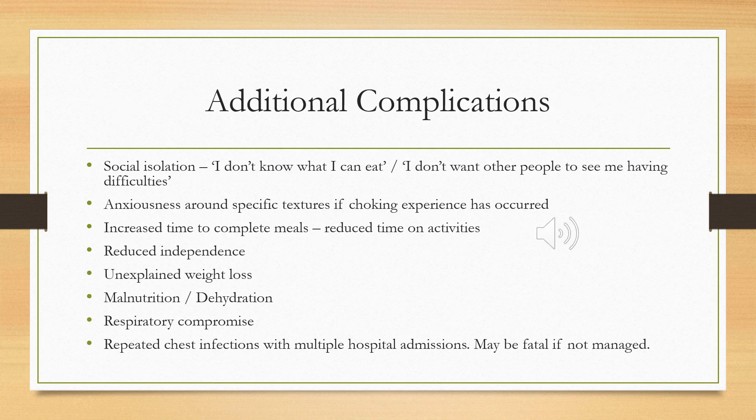Last but not least, signs of difficulty at the esophageal phase: some people might complain of a feeling of a lump in the throat, they might have reflux or heartburn, or a feeling of being full after only a small quantity of food or fluid. Additional complications of dysphagia can result in social isolation — people might say they don't know what they can eat safely, or they don't want others to see them having difficulties. Some people can develop anxiousness around specific food textures, especially if a choking experience has occurred, and might avoid all foods similar to that texture. A person might have increased time to complete a meal due to fatigue, weakness, or distractibility.